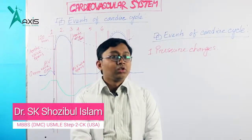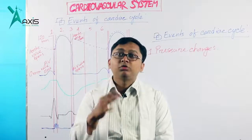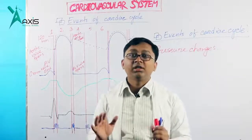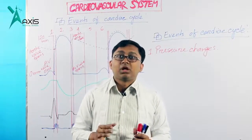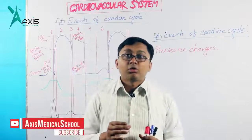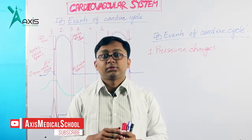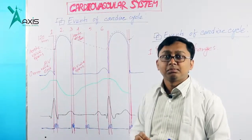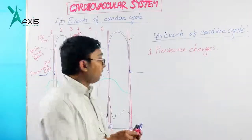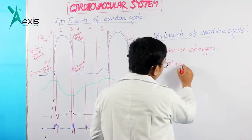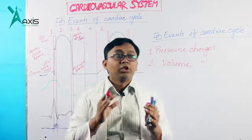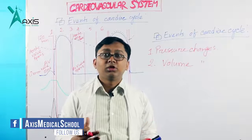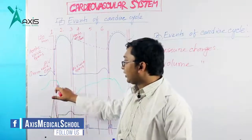During this period — from one beat to another beat — certain events occur. Number one: pressure changes. Pressure changes occur in your ventricle, atrium, and aorta during this whole period. Here I have shown the graphical representation of those events. Number two: volume changes. During the cardiac cycle, your volume also gets changed — somewhere you get increased volume, somewhere you get decreased volume.